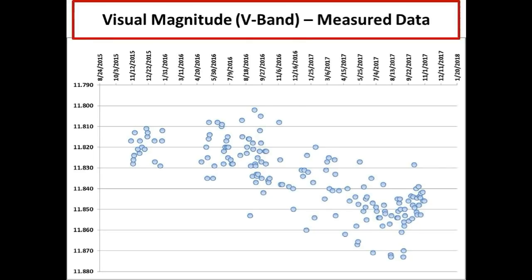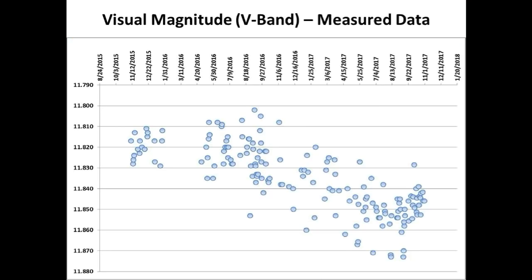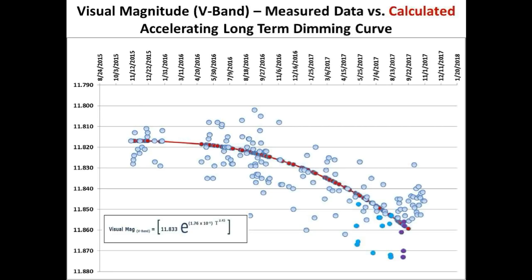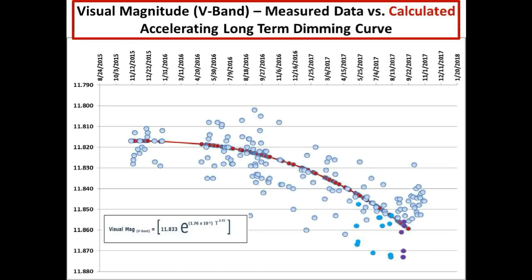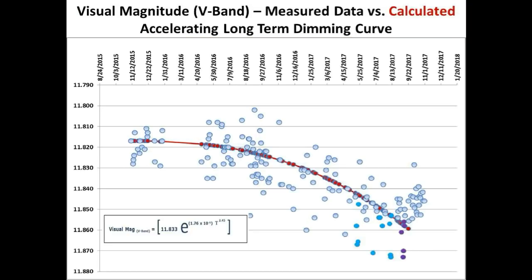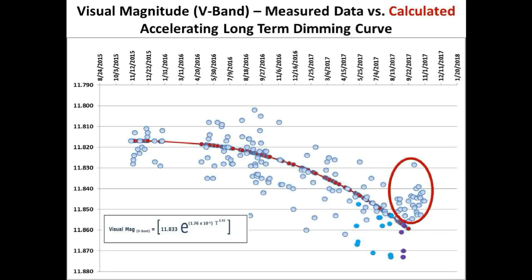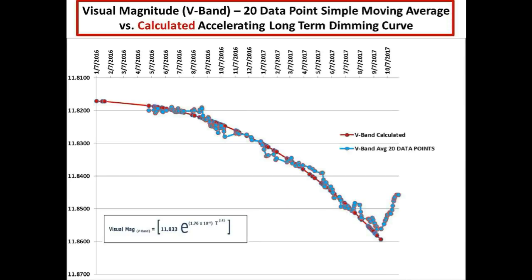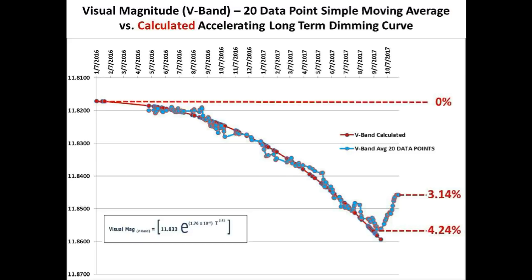These are the V-band data points over two years from October 27th of 2015 through October 31st of 2017. And these are those same data points compared to our calculated accelerating long-term dimming curve. During this time frame, the flux of Tabby Star dropped approximately 4.25%, which is a lot deeper than the old Kepler data of 3.3%. And these are the data points during the recent brightening event. If you collapse all these data points into a 20-point simple moving average curve, you get a light curve showing it following the accelerating long-term dimming curve and then rising abruptly to approximately 1.1% above the lowest flux level.